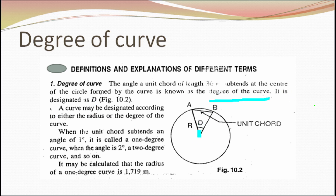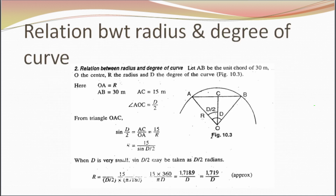A curve may be designated according to either the radius or the degree of the curve. When the unit chord subtends an angle of one degree, it is called a one-degree curve, and when the angle is two degrees, it is a two-degree curve. So this is just the simple representation of the degree of curve.